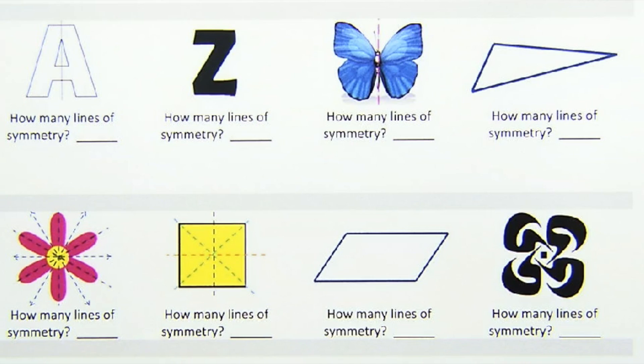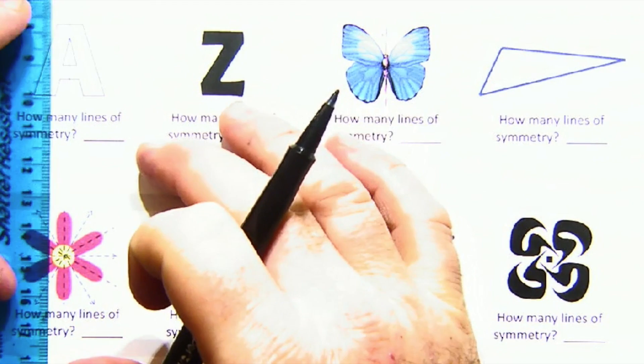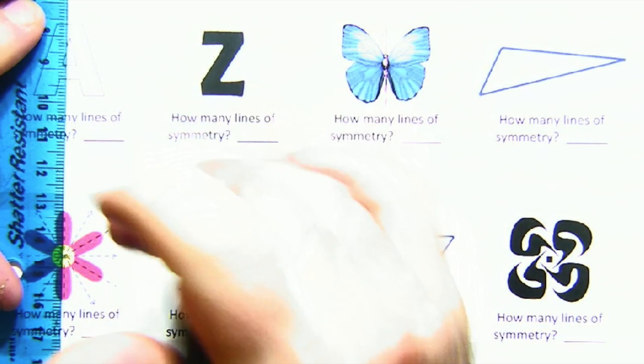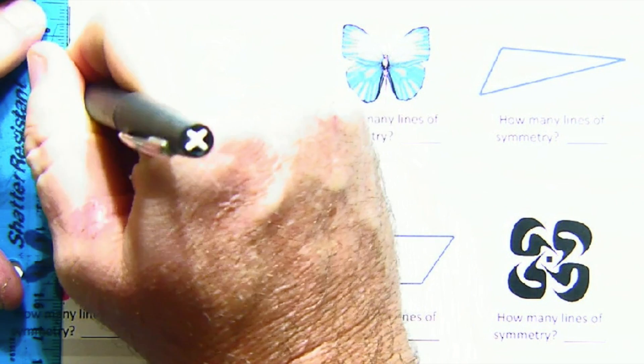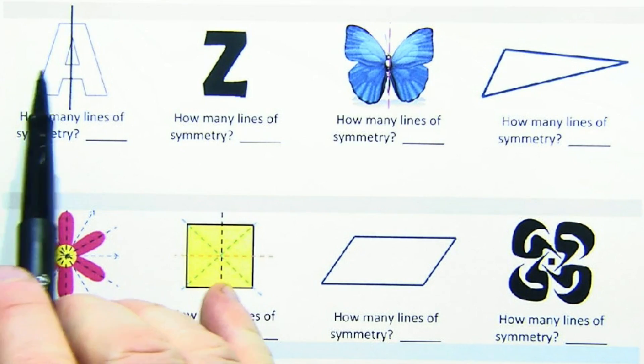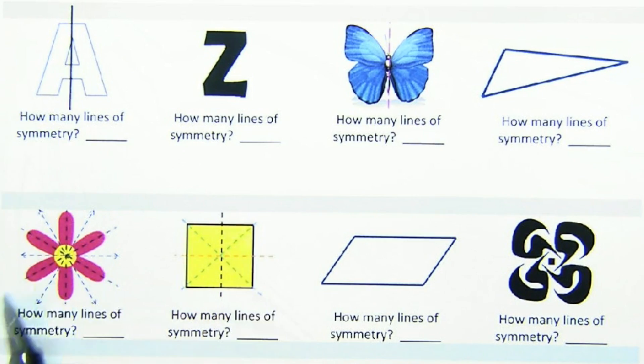So let's look at some specific examples now of line symmetry. Here we have the letter A, and you can see our nice, actually it's already been provided for us, but a nice vertical line of symmetry would map the left onto the right and the right onto the left. So it would have one line of symmetry.